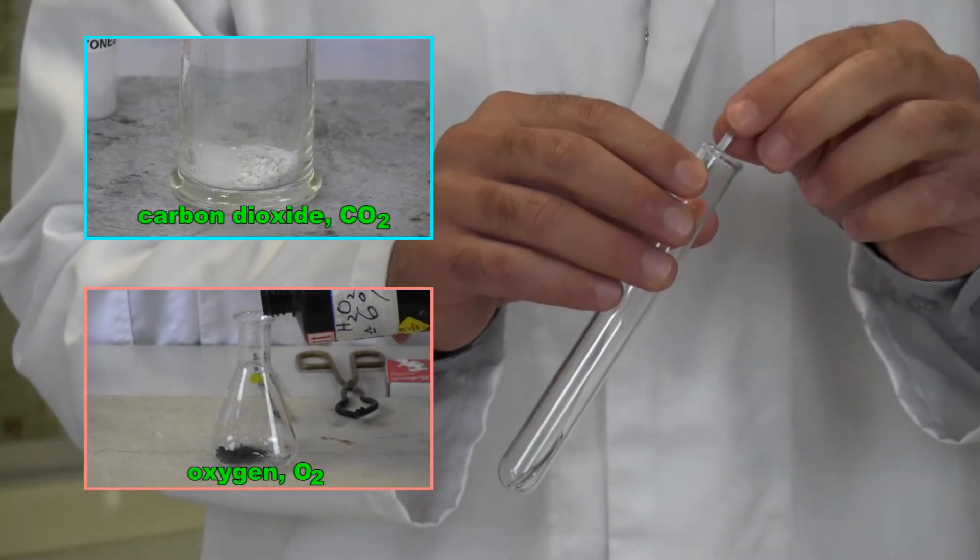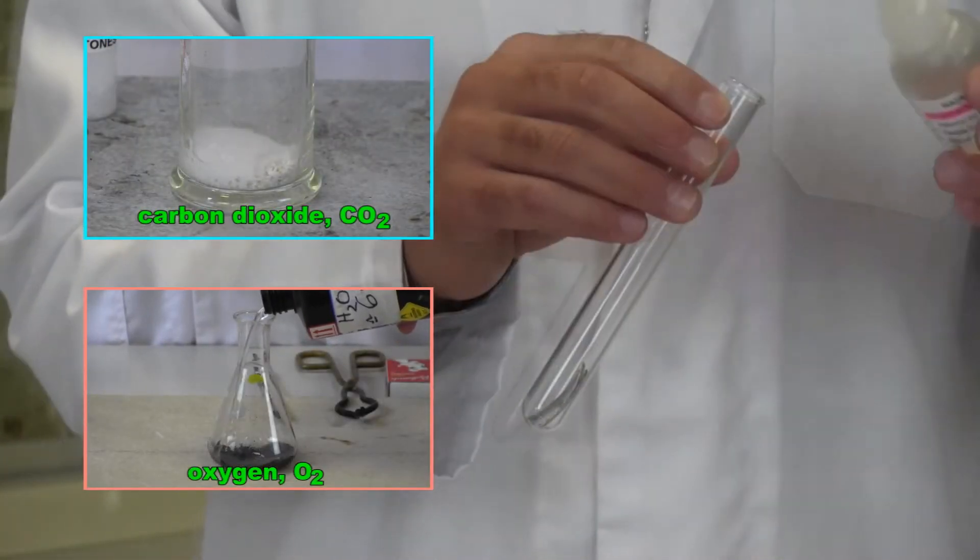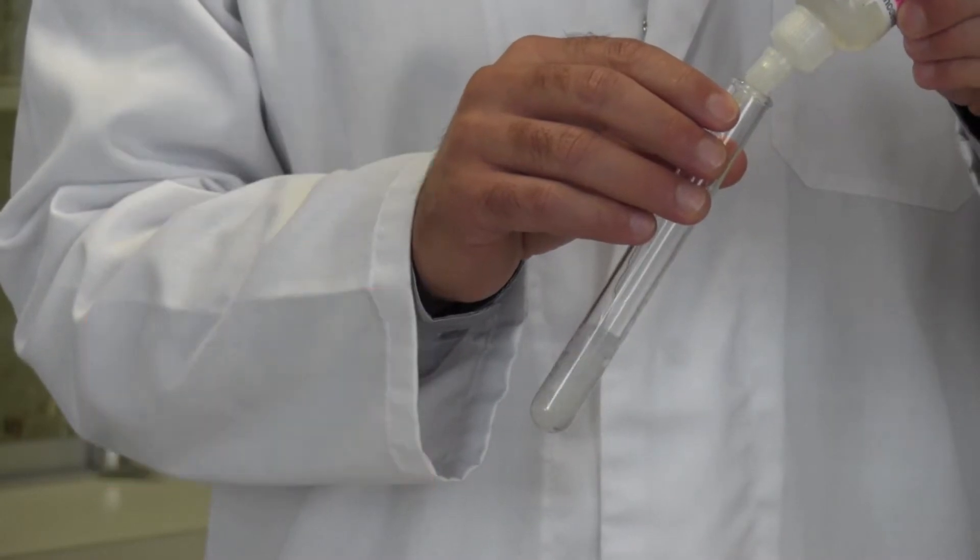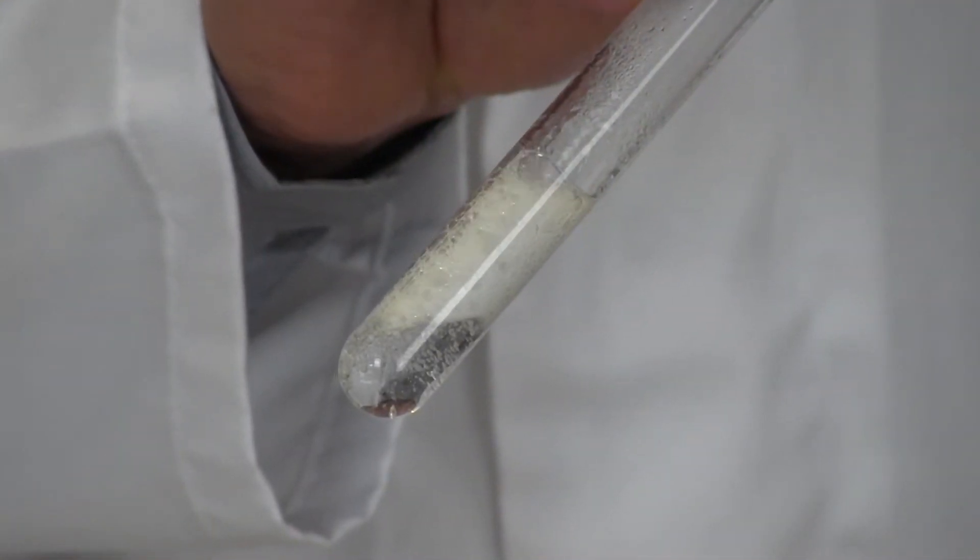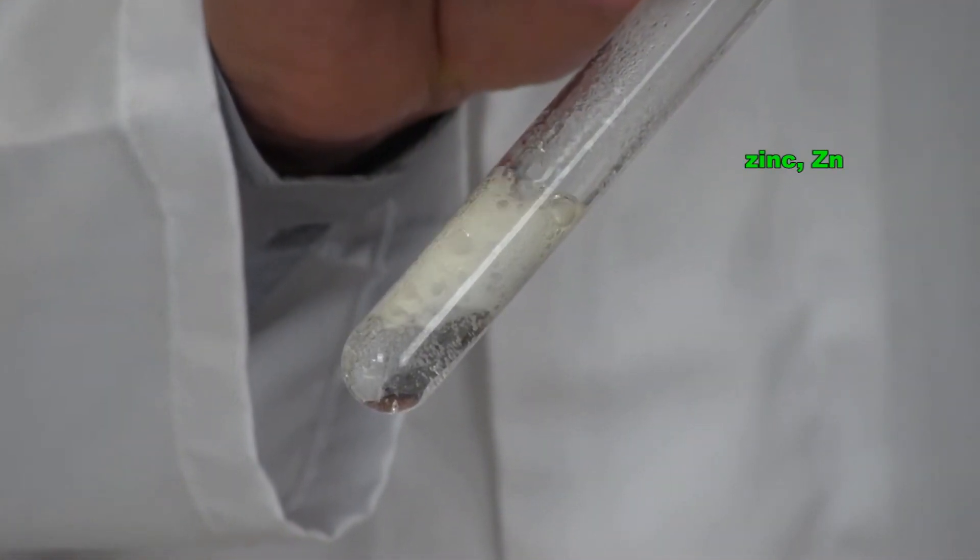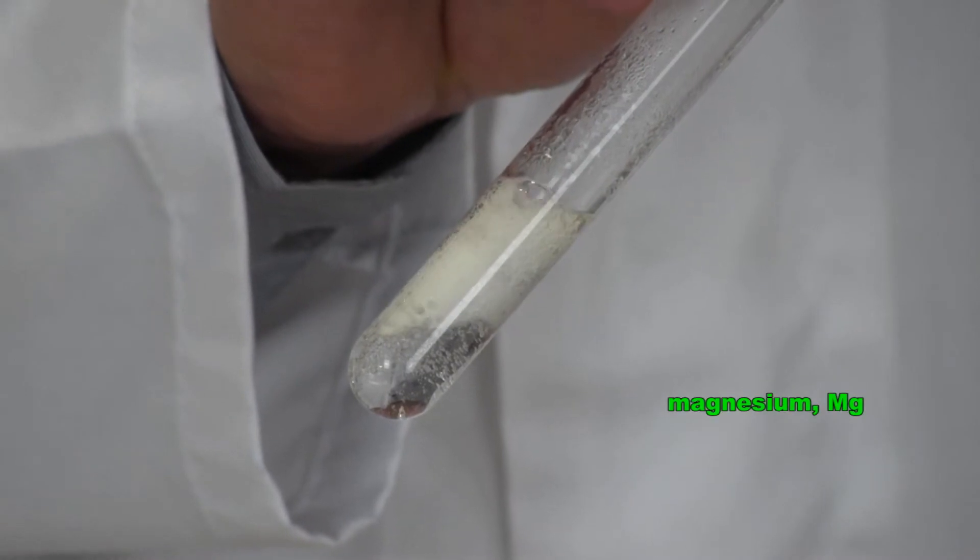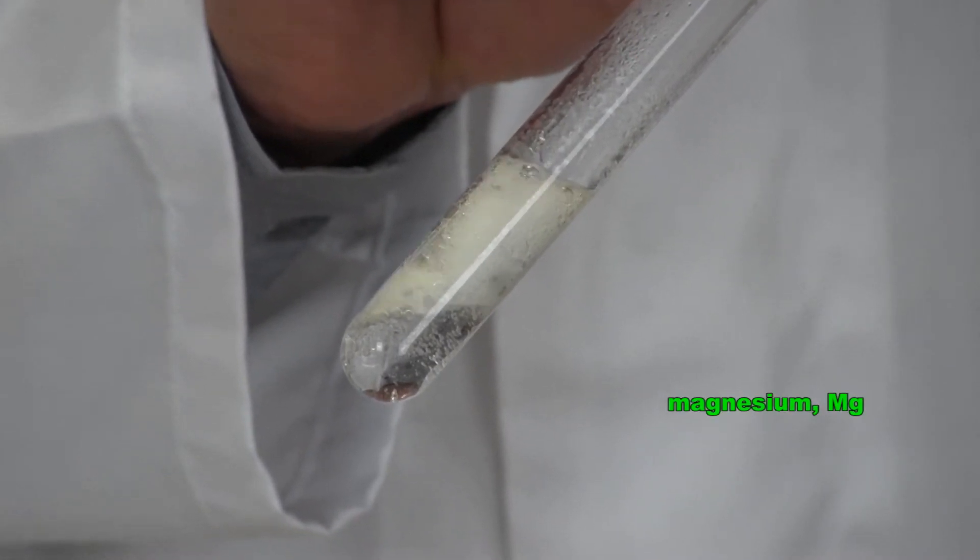Like the two reactions we saw in episode 1 that produced CO2 and O2, this one also produces bubbles of gas as soon as the two chemicals come into contact. Henry Cavendish used zinc in his experiments, but I'm using magnesium because it reacts a little faster with the acid.